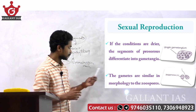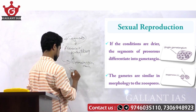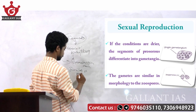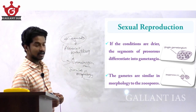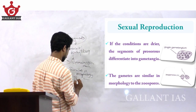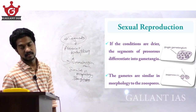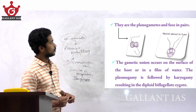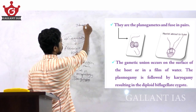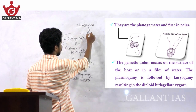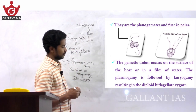The structure of a single gametangium is shown. The gametes are similar in morphology to the zoospores. These gametes are isogametes, having one flagellum — they are planogametes and fuse in pairs.